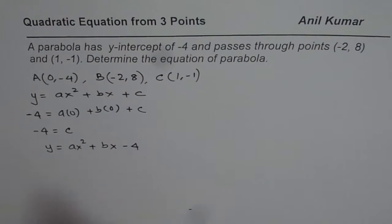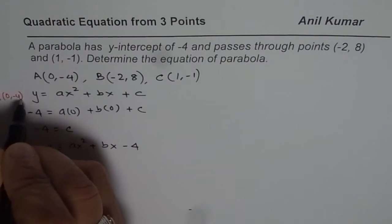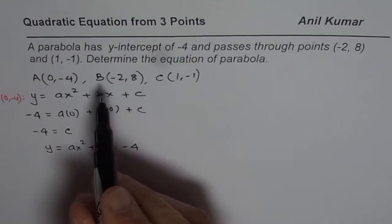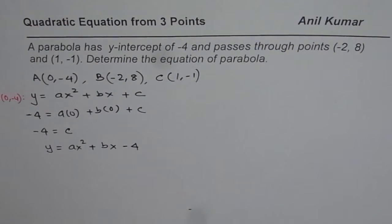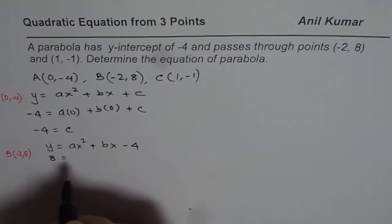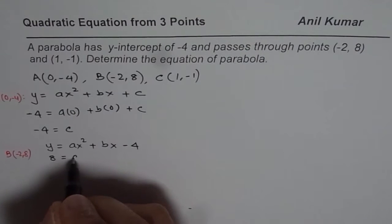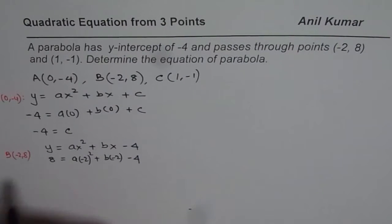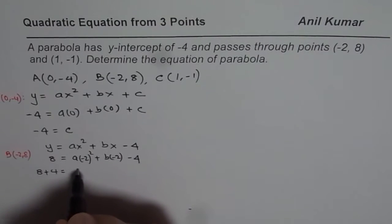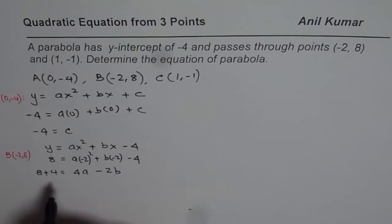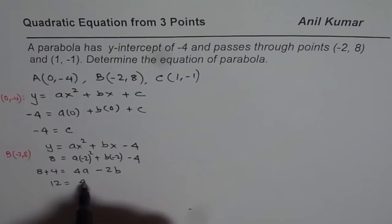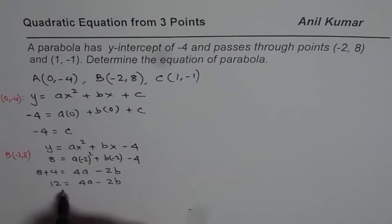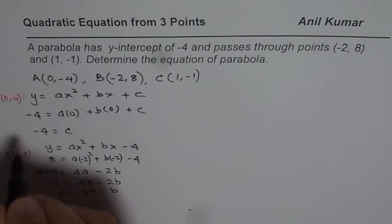We've already found one unknown from point A, the y-intercept. Now we use point B, which is minus 2, 8. Substituting y equals 8 and x equals minus 2, we get 8 equals A times minus 2 squared plus B times minus 2 minus 4. Bringing minus 4 to the left: 8 plus 4 equals 4A minus 2B, so 12 equals 4A minus 2B. Dividing by 2, we get 6 equals 2A minus B. Let's call this equation 2.